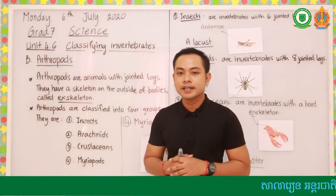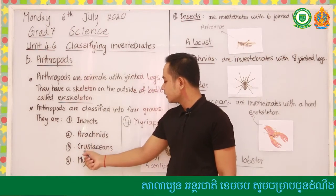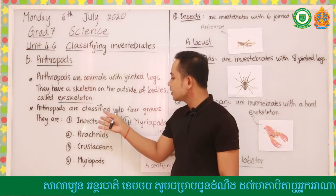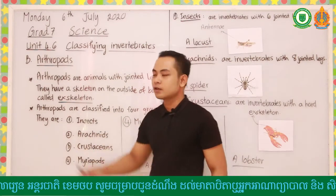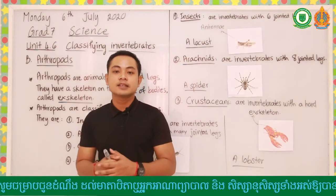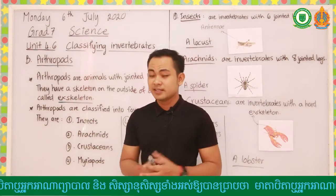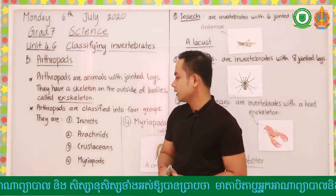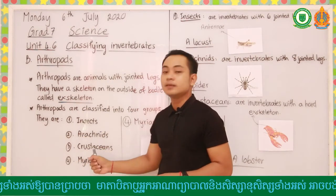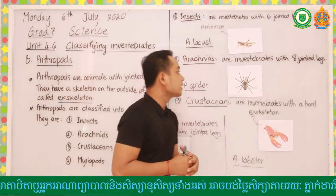Arthropods are classified into four classes or four groups: insects, arachnids, crustaceans, and myriapods. When I ask how many groups arthropods are classified into, you can answer: four. And what are they? They are insects, arachnids, crustaceans, and myriapods. Insects are invertebrates with six jointed legs.